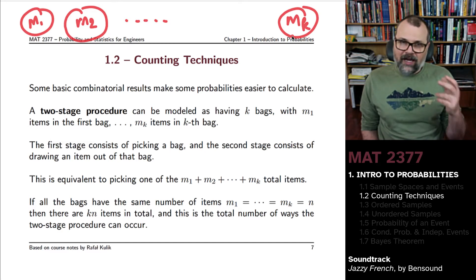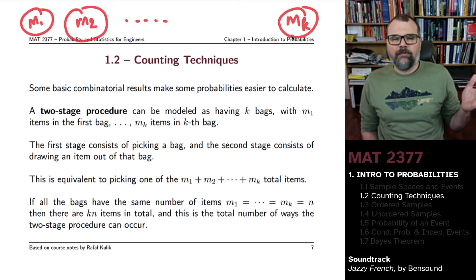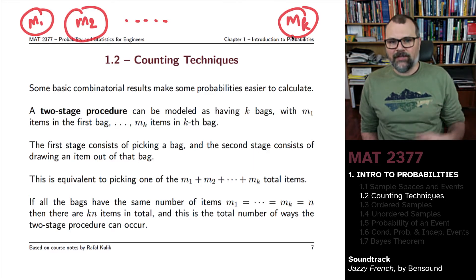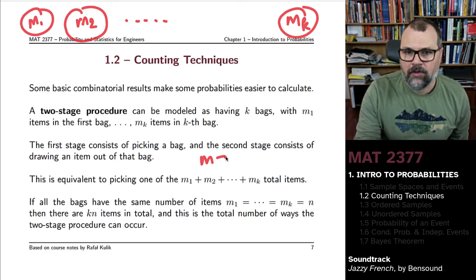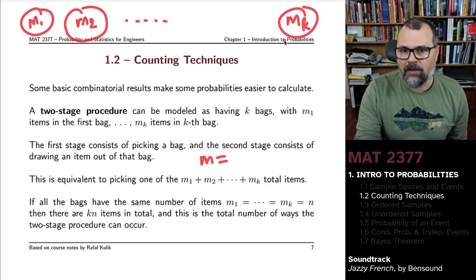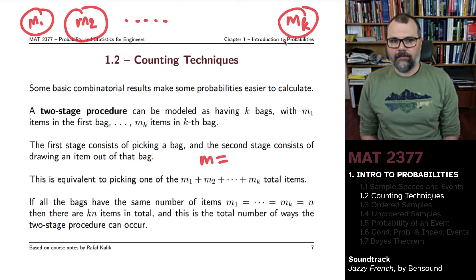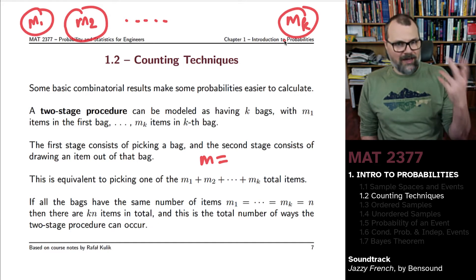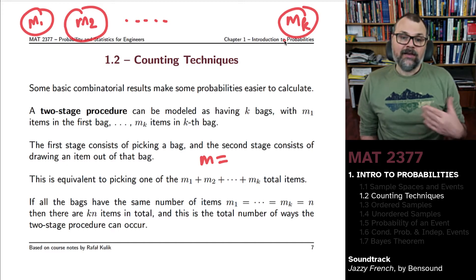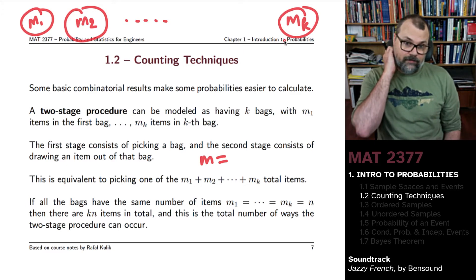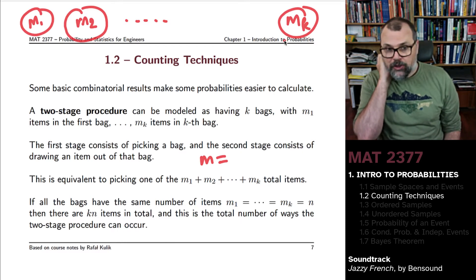It sounds complicated when I say it this way, but this is just equivalent to picking one of the M items that you have in total. Assuming here that M is the sum of the number of items in the first bag, in the second bag, all the way up to the last bag. And if it turns out that all of the bags have the same number of items in it, if M1 was the same thing as M2, which was the same thing as M3, all the way up to Mk, and it would say N.